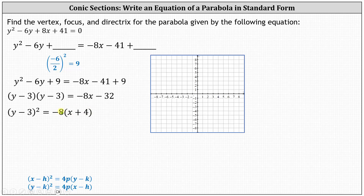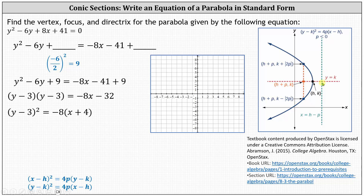Notice if we distribute negative 8, we still have negative 8x minus 32. Now we have the equation in standard form. Notice 4p is equal to negative 8 and therefore p is negative 2. Since p is negative and the y part is squared, the parabola opens left. Recall the vertex is h comma k, and because the parabola opens left, the focus is always inside the parabola — to the left of the vertex — and the distance from the vertex to the focus is always equal to the absolute value of p units. The absolute value of p also gives us the distance from the vertex to the directrix.